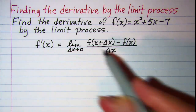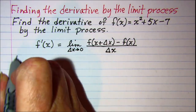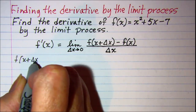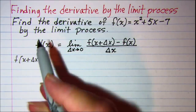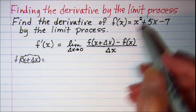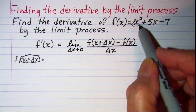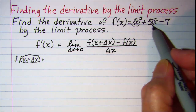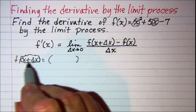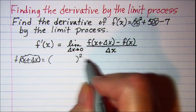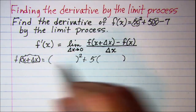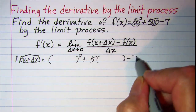So first let's find f of x plus delta x. This means that we will be putting x plus delta x into our function every place where we see an x.